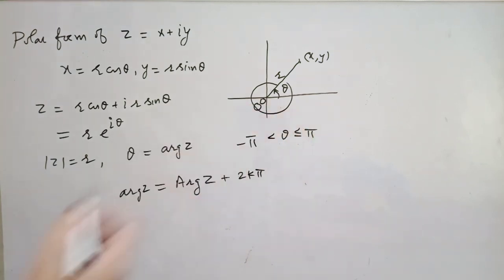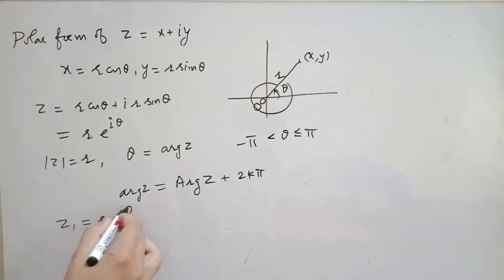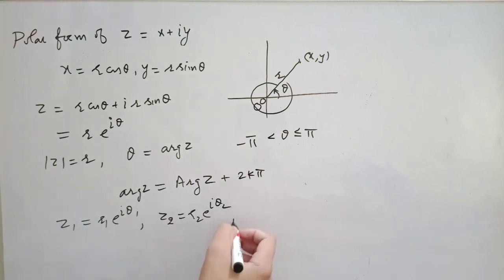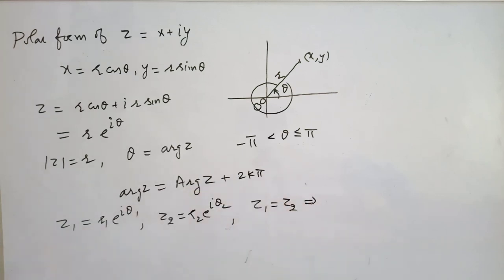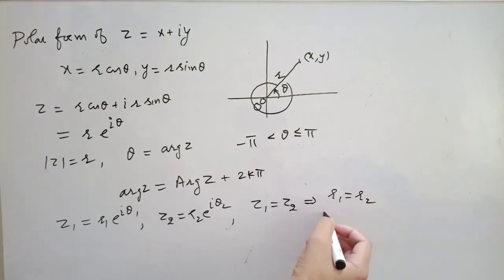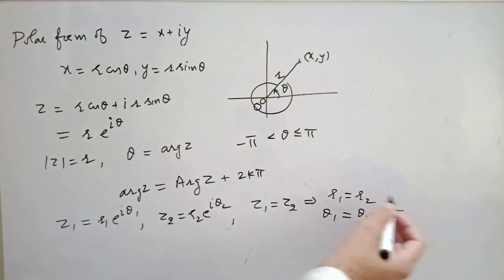If z₁ = r₁e^(iθ₁) and z₂ = r₂e^(iθ₂), then z₁ = z₂ implies r₁ = r₂ and θ₁ = θ₂ + 2kπ for some integer k. This is how equality of two complex numbers is expressed in polar form, and this is useful in finding nth roots of a complex number.